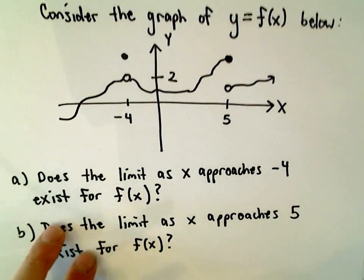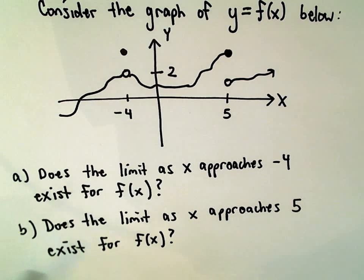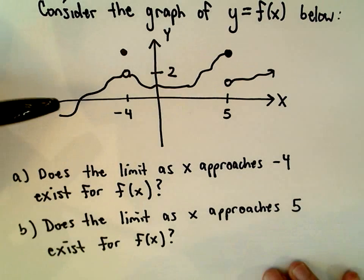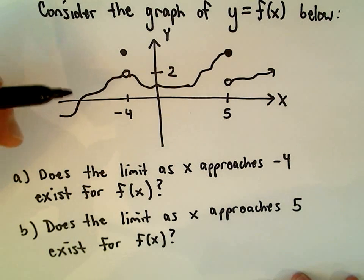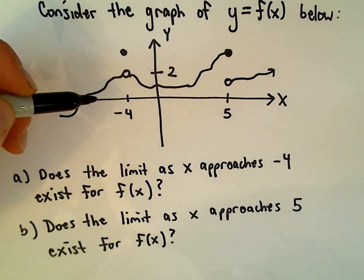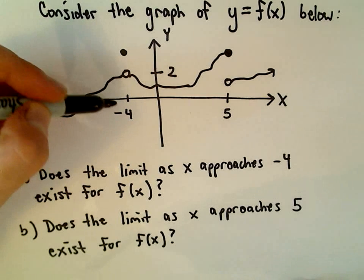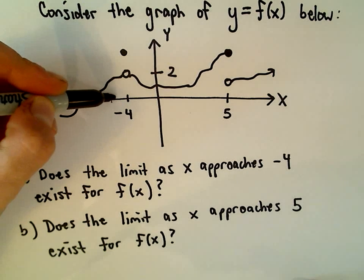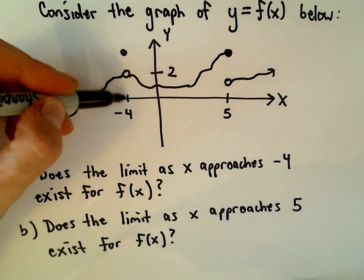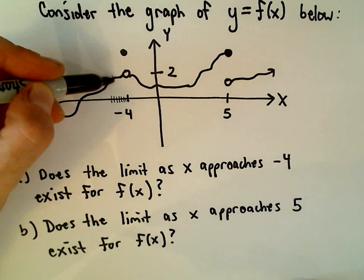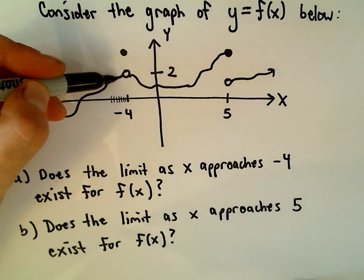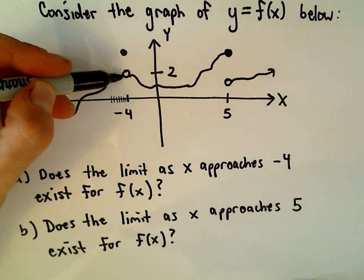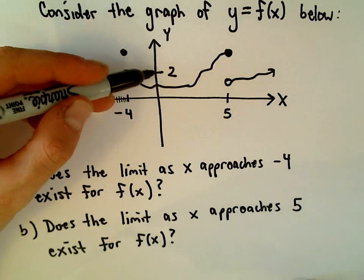Part A, we just want to ask ourselves: does the limit as x approaches negative 4 exist for this function? As x approaches negative 4, I'm thinking about what's happening to the y values — do they approach some specific single y value? If we take x values a little bit smaller than negative 4 and think about what the y values are getting closer to on the graph, the y values are getting closer and closer to the value positive 2.